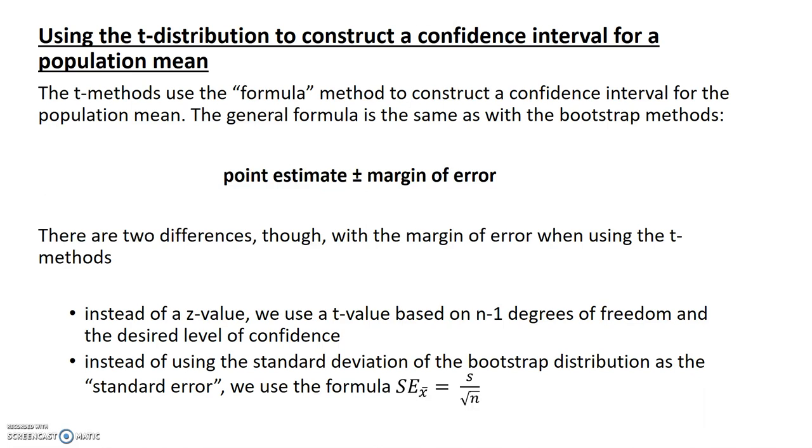Now, this margin of error includes two pieces of information. It includes a T critical value based on n minus 1 degrees of freedom, and this critical value is going to reflect our desired level of confidence, for example, 95%. The other thing that this margin of error includes is a standard error. And since we're using T methods, the standard error will have the form s over square root of sample size.